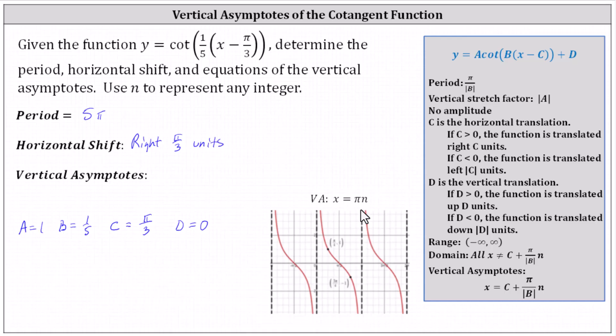Before we determine the equations of the vertical asymptotes, let's look at the basic cotangent function shown here below. Notice if we start at x equals zero, we have a vertical asymptote. Then from there, if we add multiples of the period, represented by pi times n, we have all the equations for the asymptotes. X equals zero plus pi n simplifies to x equals pi n.